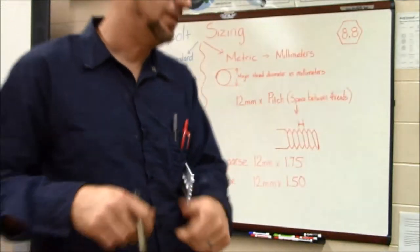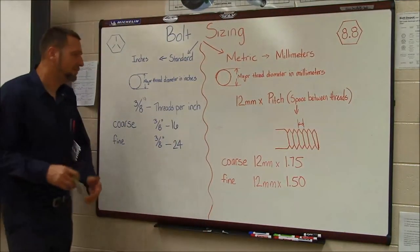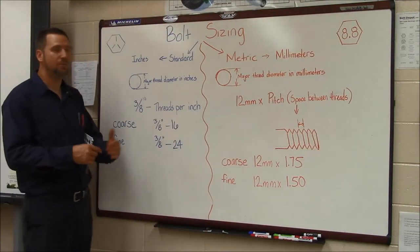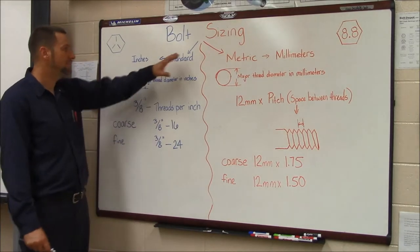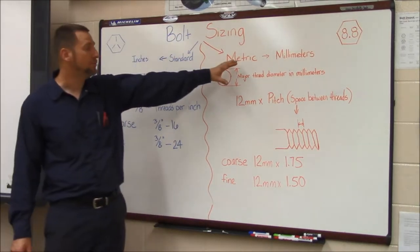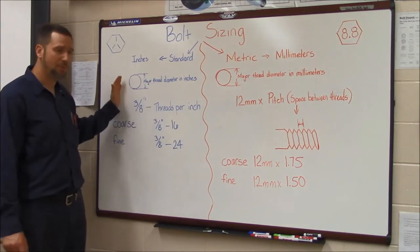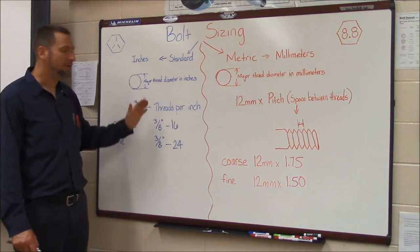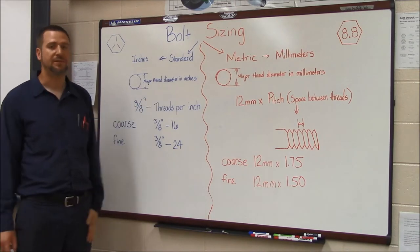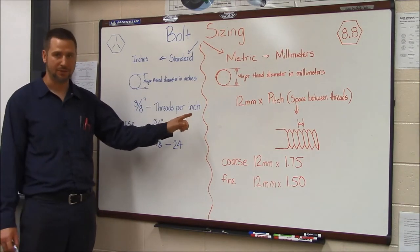So step two, after you decide what your major thread diameter is and you figure out which system the bolt belongs to, metric or standard, if it's a standard bolt, we're going to figure out the space between the threads. And in standard bolts, we consider that threads per inch.